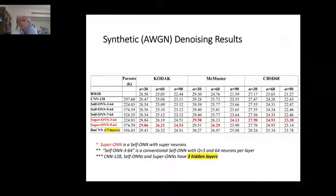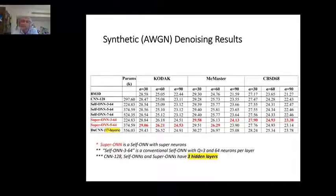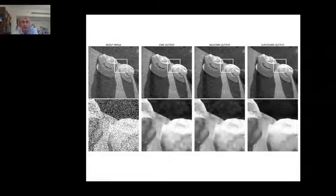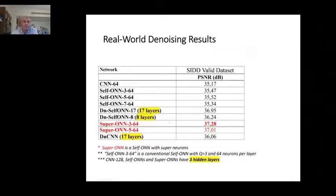The SONN with super neurons outperforms on denoising, where CNN and standard SONN outputs still suffer from noise. The background, for instance, is much better with super neurons. Looking at the quality of edges, you can understand how much better a new neuron model can perform.